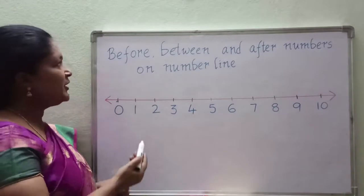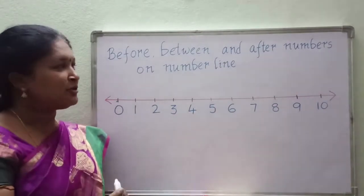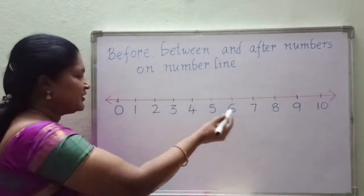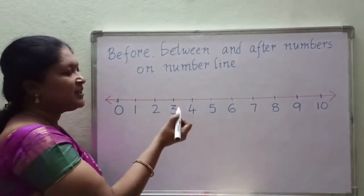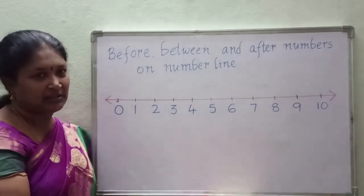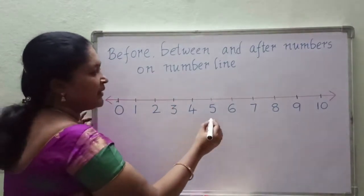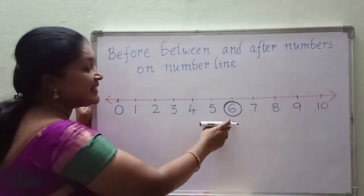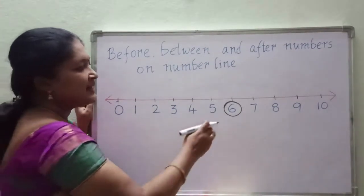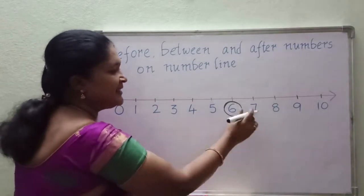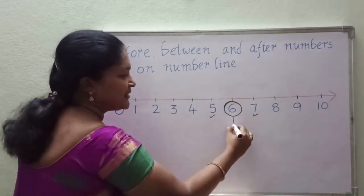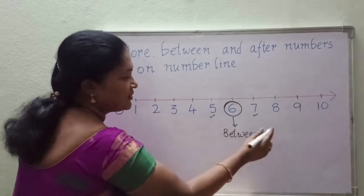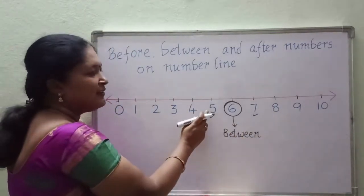Just now I told you about before, between and after numbers and their positions. So here, see before, between and after numbers on the number line. On the number line some numbers are there and you have to identify the before, between and after numbers. I want to take number 6. Where is 6? 6 lies between 5 and 7. So 6 is the between number of 5 and 7.